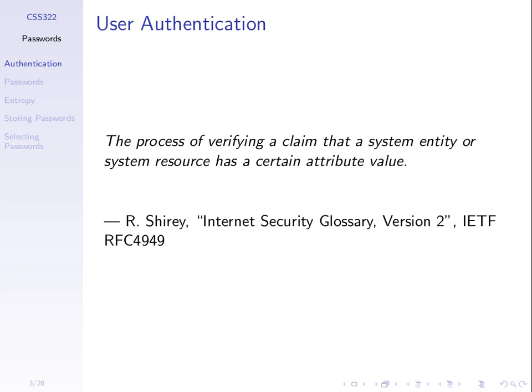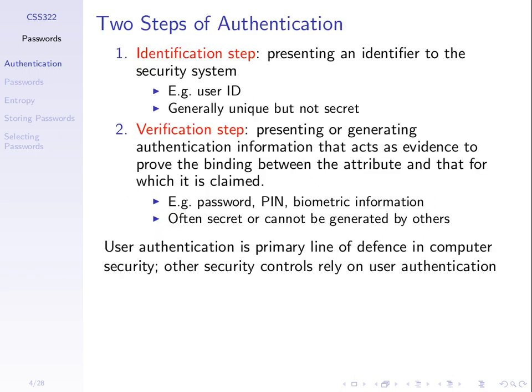What do we mean by user authentication? Here's a definition: the process of verifying a claim that a system entity or resource has a certain attribute value. It's a very general definition — a system entity claims to have some attribute, and the system needs to verify that claim. It's easily described as two steps.